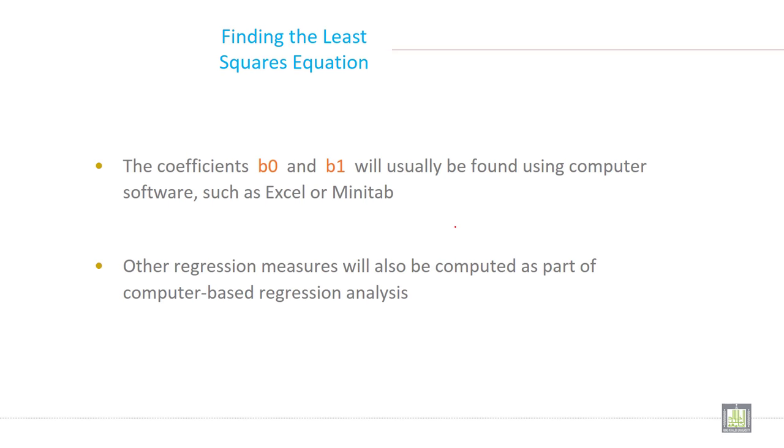The coefficients B0 and B1 will usually be found using computer software such as Excel, Minitab, and SPSS. Other regression measures will also be computed as part of computer-based regression analysis.